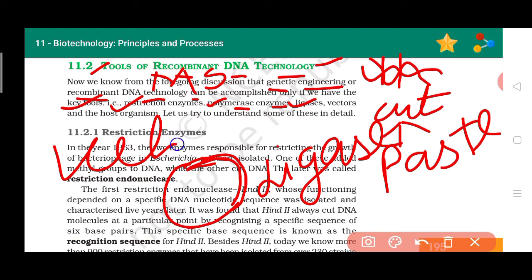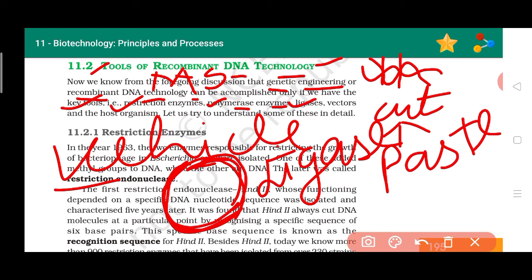After that comes vector. Vector is a vehicle. You all understand what a vehicle is — it takes us from one place to another. In recombinant DNA technology, the vector — like a plasmid — first has the desired gene pasted into it, and then it is introduced into the host.